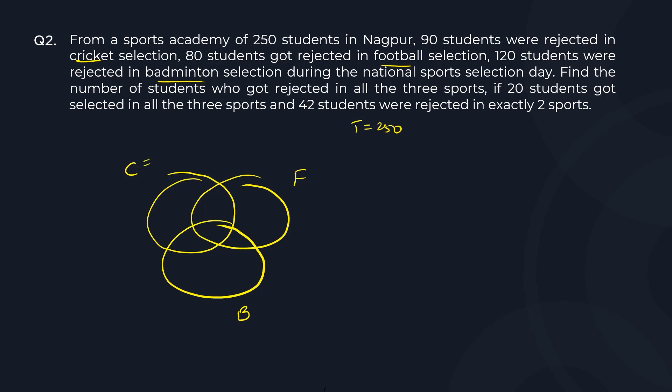People who got rejected in cricket are 90, people who got rejected in football are 80, and people who got rejected in badminton are 120. Find the number of students who got rejected in all three sports if 20 students got selected in all three sports.